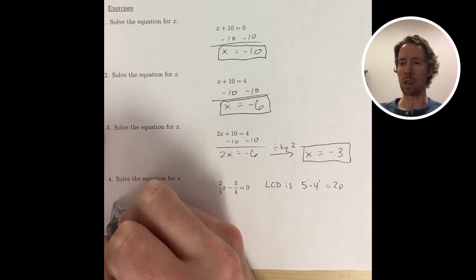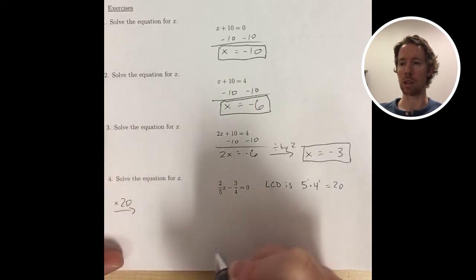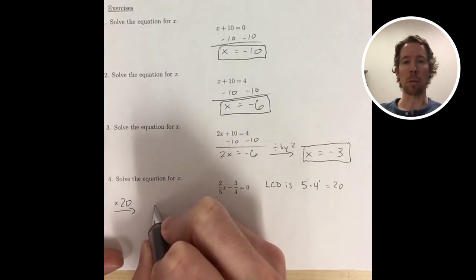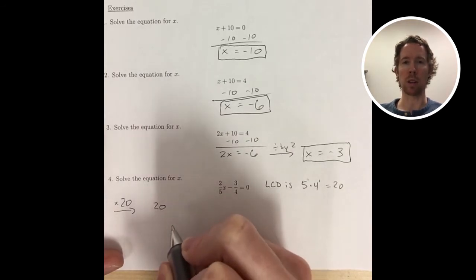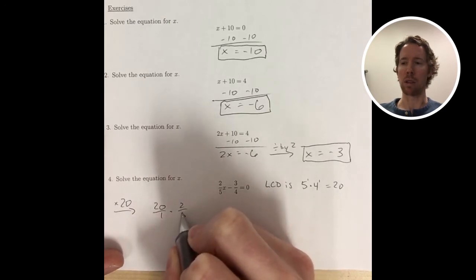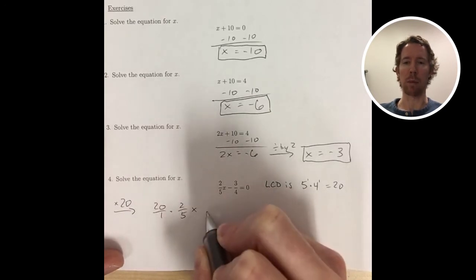So I found the least common denominator. I just multiplied the two denominators together and got 20. And now if I multiply the whole equation by 20, the left side and the right side, then all of the fractions will get wiped out.